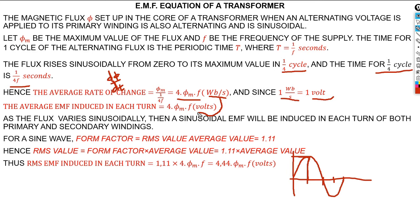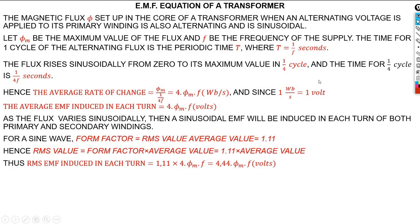Since the flux varies sinusoidally, a sinusoidal EMF will be induced in each turn of both the primary and the secondary. The sine wave form factor is given by the RMS over average value, which equals 1.11. To get the RMS value of the induced EMF, we multiply the form factor by the average value — that is 1.11 times the average value. Therefore, the induced RMS EMF is equal to 1.11 times 4 times the flux times the frequency.